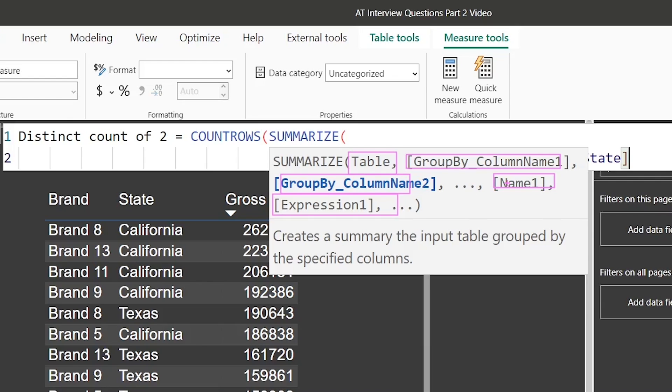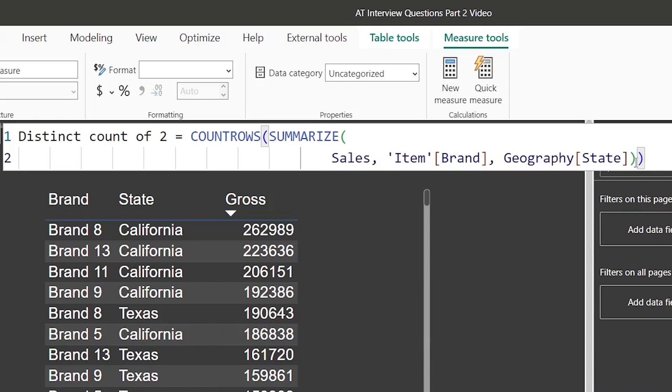So group-bys and the name expression - those expressions should give the data based on these group-bys. That's where we need aggregation or we need measures. Geography State - I'm going to close SUMMARIZE, I'm going to close COUNT ROWS also. Press Enter.